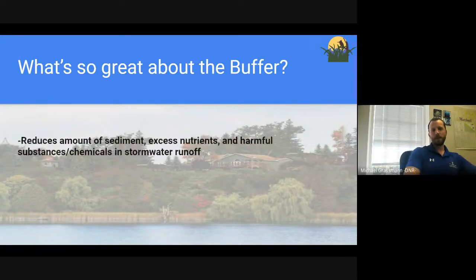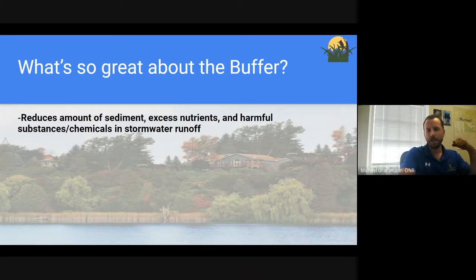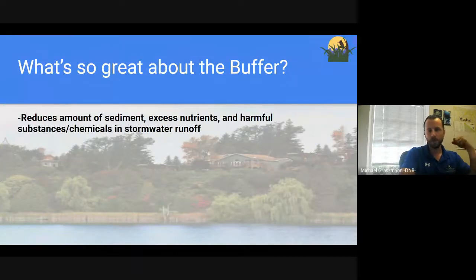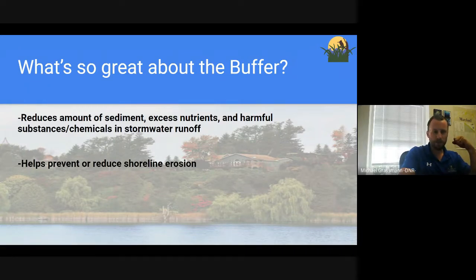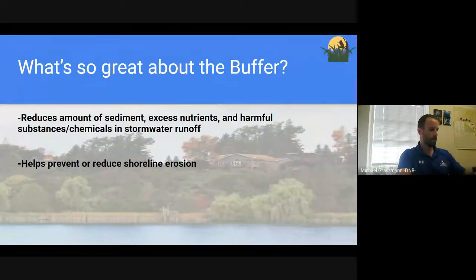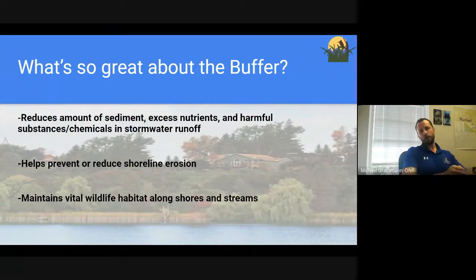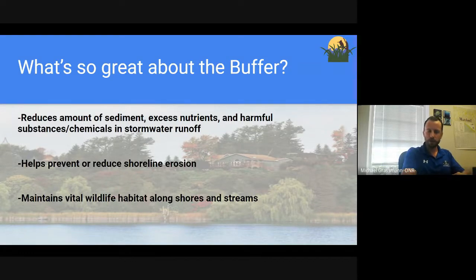So why is the buffer so important? It reduces the amount of sediment, excess nutrients, and harmful substances and chemicals that run off from stormwater into the Bay and into streams. It can trap and sequester these pollutants. It helps prevent and reduce shoreline erosion — a barren buffer will erode much faster. And it maintains vital wildlife habitat along shores and streams, including important flyovers and nurseries for different fish species and amphibians.